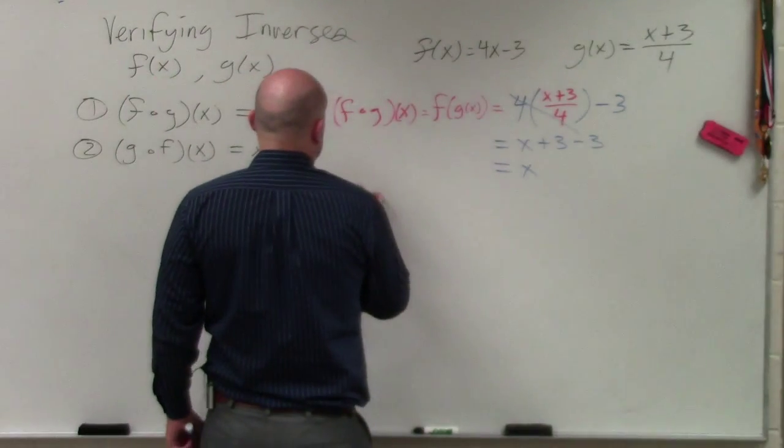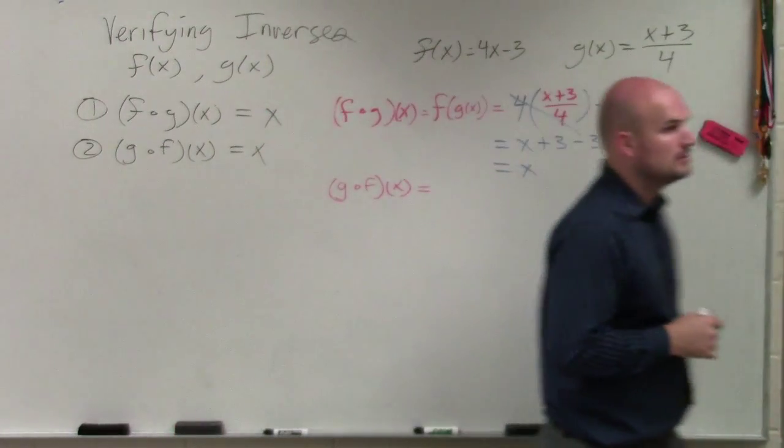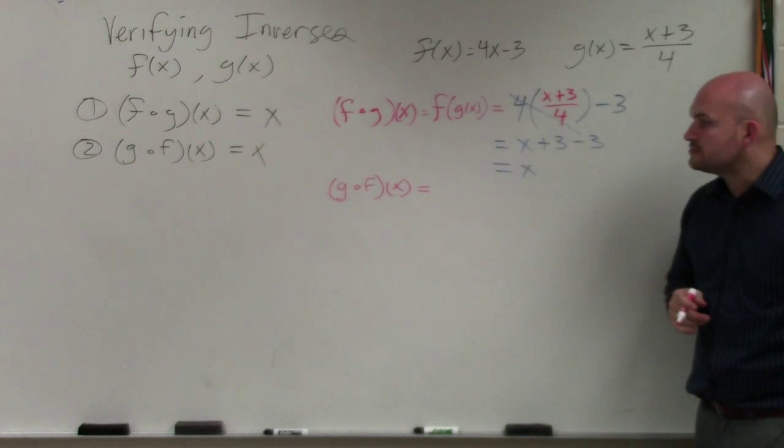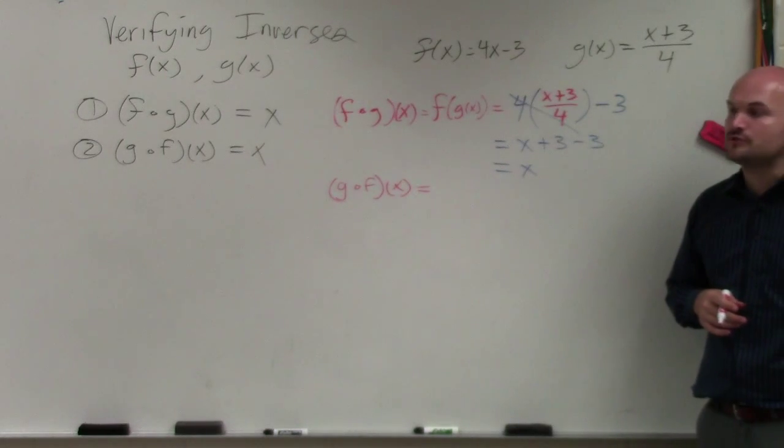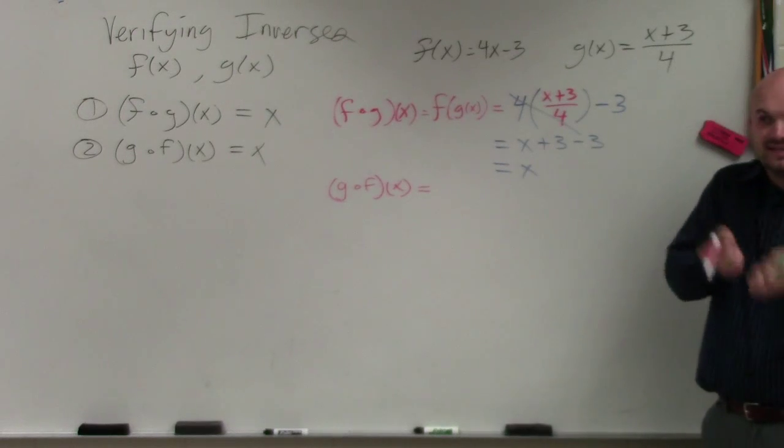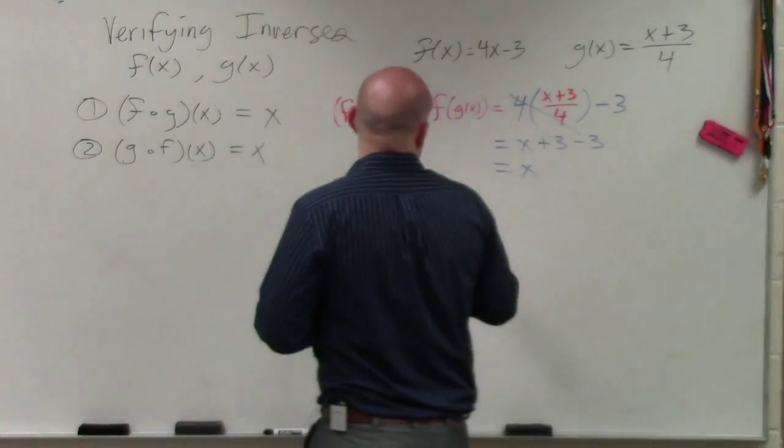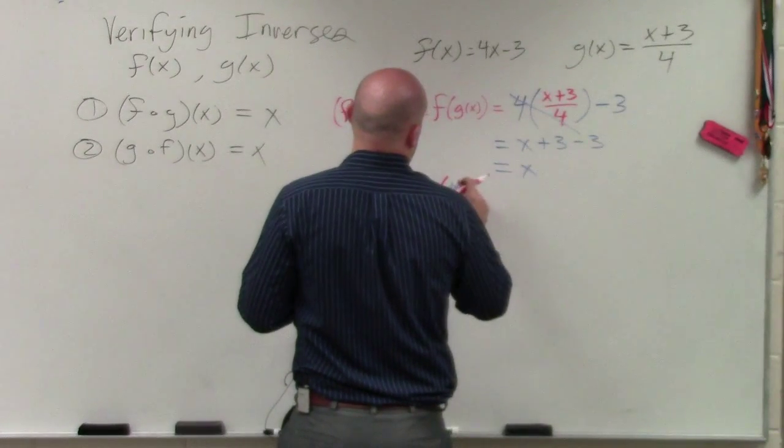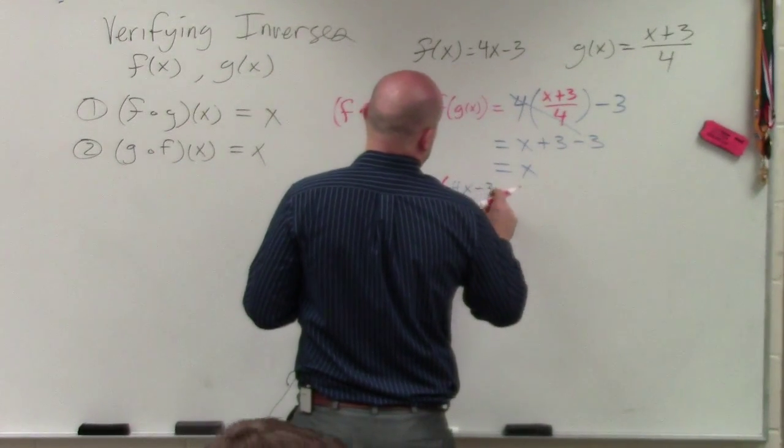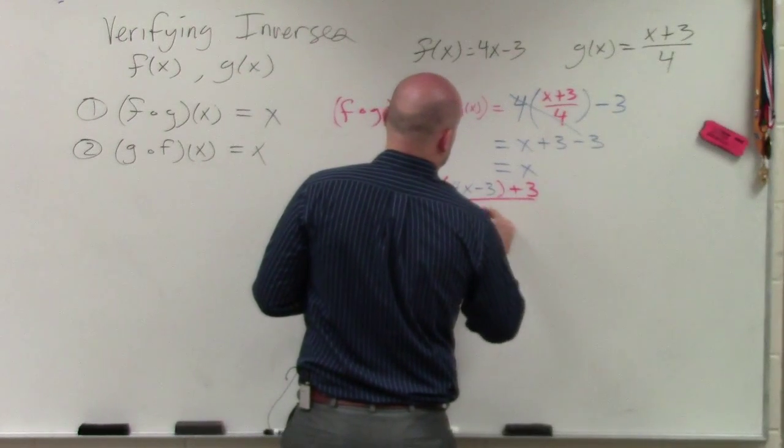Now, let's do g of f of x. So all I'm asking you guys to do for g of f of x, remember, is now we're going to plug in the f of x function into the g of x function. So the g of x function is going to look like this, 4x minus 3 plus 3 divided by 4.